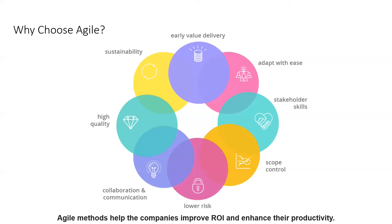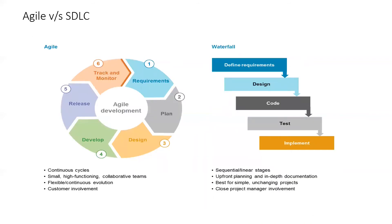Let's see the difference between the traditional method and Agile. Looking at the Software Development Life Cycle — the waterfall method — the process is sequential with linear stages: define requirements, develop a design, start coding, do testing, then implement. There is a lot of planning and in-depth documentation involved. It is best suited for simple projects that are not going to change — unchanging projects — and there is close project manager involvement at every stage.